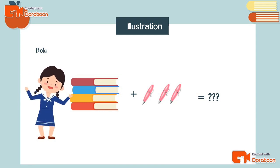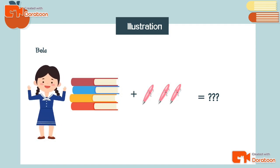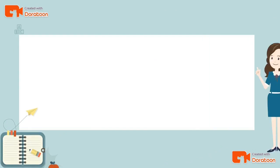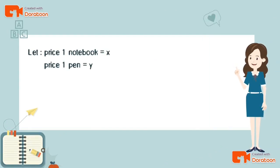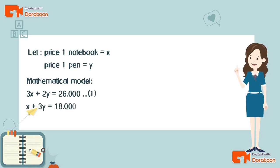To solve the problem, we must change it into a mathematical model. Let the price of one notebook equal x and the price of one pen equal y. Then: 3x + 2y = 26,000 is the first equation, and x + 3y = 18,000 is the second equation.